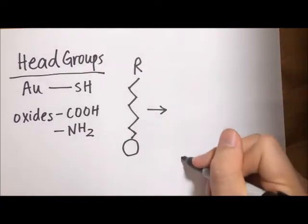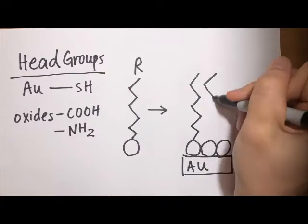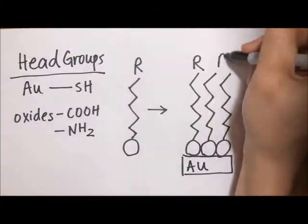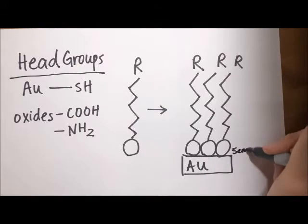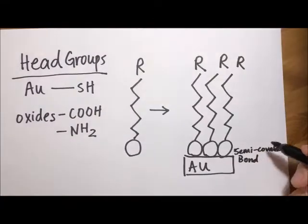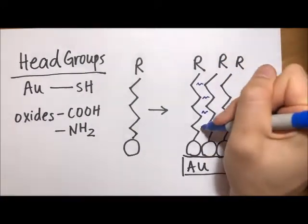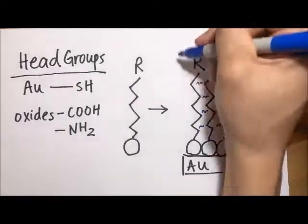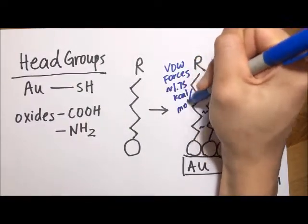The tail groups are usually long hydrocarbon chains, which extend and present the functional groups. The hydrocarbon chains also serve a dual purpose where van der Waals forces between the chains cause the chains to self-align and pack very tightly together to help form the monolayer. A very common SAM is using thiols to bind to gold, which form a semi-covalent bond with a strength of 45 kcal per mole, while the van der Waals forces between the hydrocarbon chains are 1.75 kcal per mole.